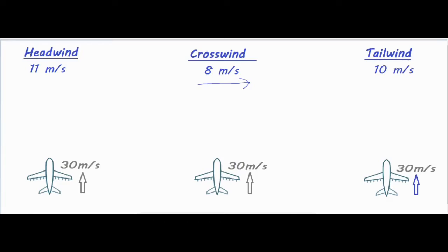For each of these problems, you want to make sure you connect the vectors using the tip-to-tail method, which means wherever one vector ends, that's where the next one starts. Just like regular addition, it doesn't matter the order in which you add them. So let me go ahead and add each of my vectors and then we'll see what the solution looks like for all three of them.